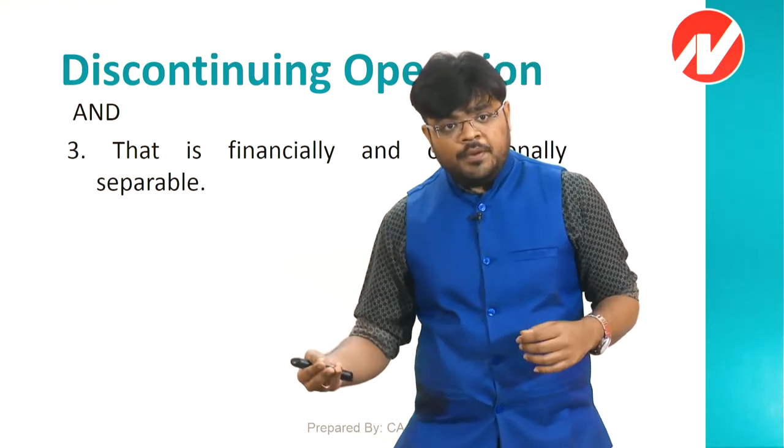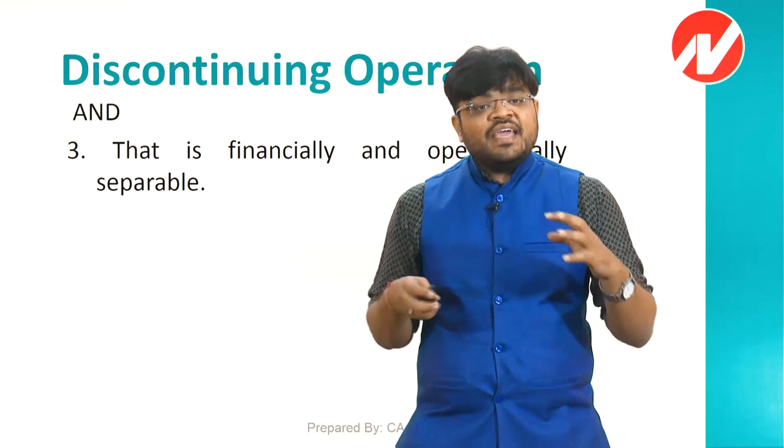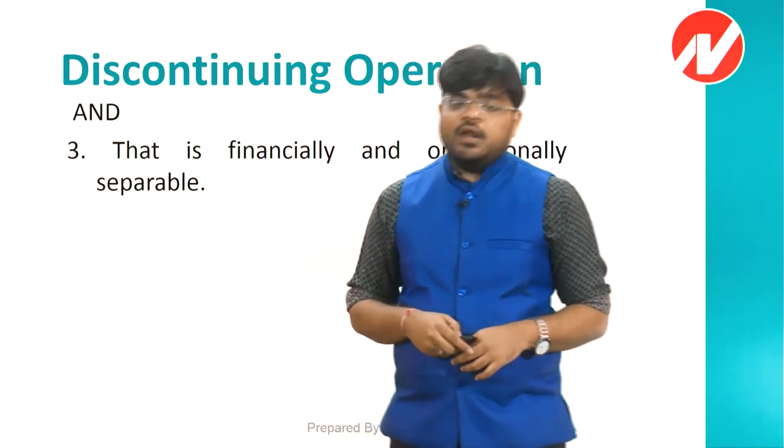To summarize: the standard covers discontinuing operation rather than discontinued operation. AS-17 provides segment-wise information but will not provide whether a particular segment will continue in future or not. There is a stakeholder — moody, bank — whose financial performance, financial position, and cash flow will be affected. The discontinuing operation means a component of a business being disposed of pursuant to a single plan — either lump sum, piecemeal, or termination — representing a separate major line of business or geographical segment, and that is financially and operationally separable.